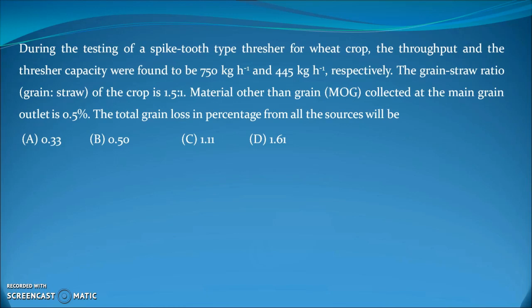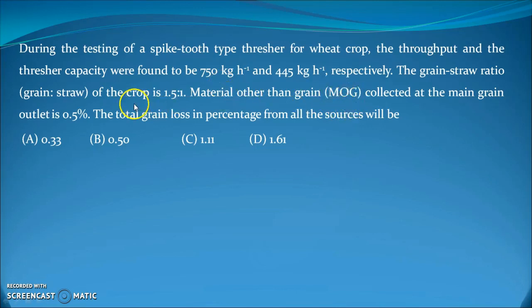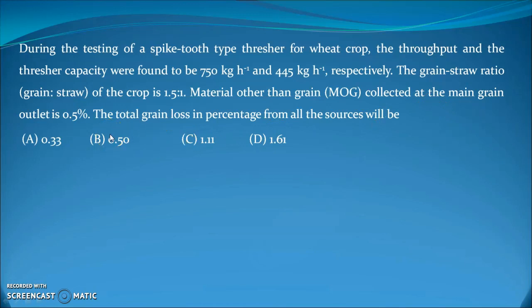The first question is from the pharmaceutical testing of a spike-tooth thresher for root crop. The throughput and the thresher capacity were found to be 750 kg per hectare and 445 kg per hectare respectively. The input is 750 and output is 450 kg per half hour. The grain-to-straw ratio of the crop is 1.5:1. Material other than grain collected at the main grain outlet is 0.5%. The total grain loss in percentage from all sources will be how much percent.